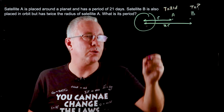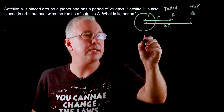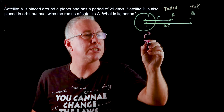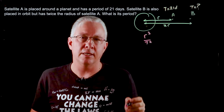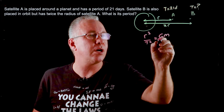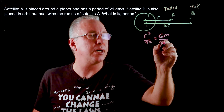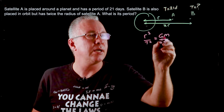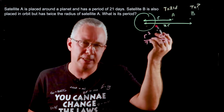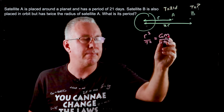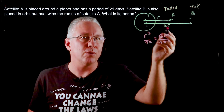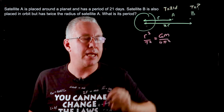Kepler's third law states that r³ over T² is a constant value, equal to GM over 4π², where G is the gravitational constant, 4π² is a constant, and M is the mass of the planet or central body.